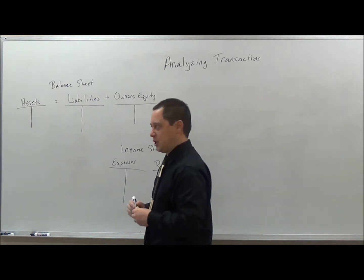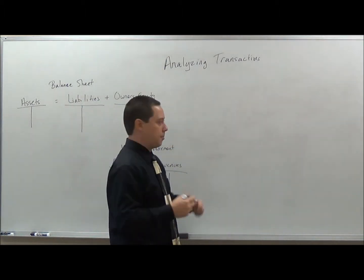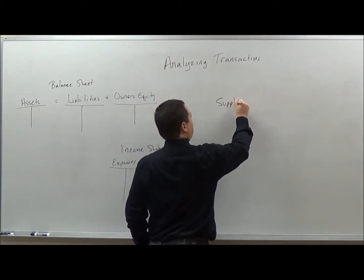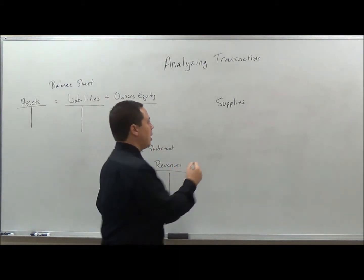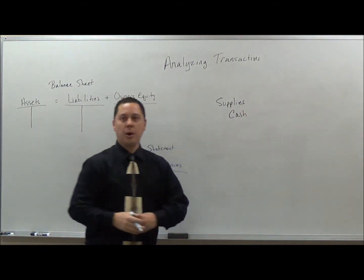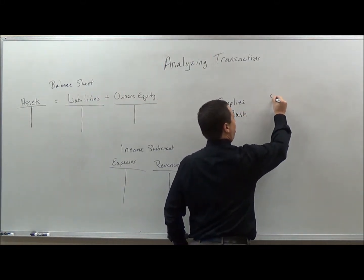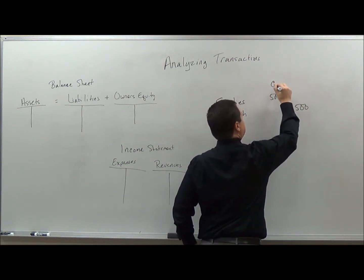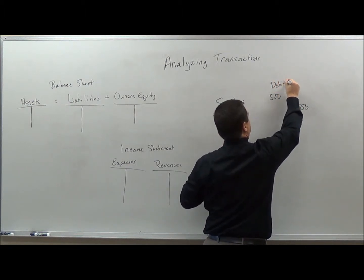So let's analyze some transactions here. One of the first ones I want to analyze is a purchase of supplies. So if I purchase supplies here, I will use cash for that. So I'm going to have a minimum of two accounts that I am playing with here to complete this transaction. So if I purchase supplies for $500, this is my debits here and this is my credit.